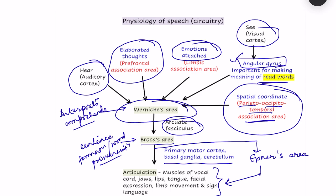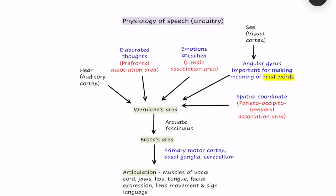So these are the various areas involved in speech. To understand a little bit more, let us see what will happen if these areas are damaged. Suppose Wernicke's area is damaged — the person will not be able to comprehend anything, whether by reading or hearing. This causes aphasia, which is basically a speech disorder. Speech disorders caused by damage to these speech areas are known as aphasias, and in aphasias articulation is normal. Damage to Wernicke's area, Broca's area, arcuate fasciculus, Exner's area, or the angular gyrus will all lead to aphasias.